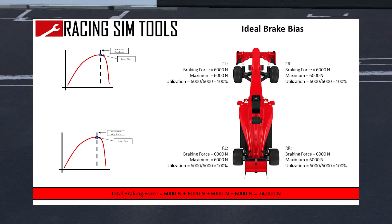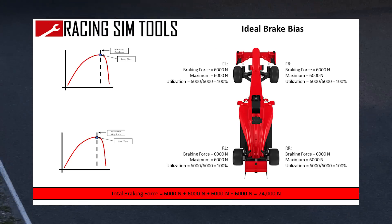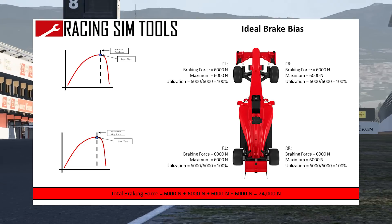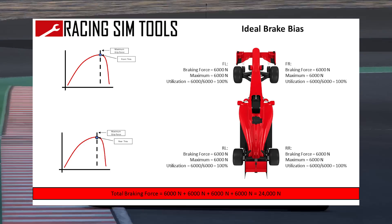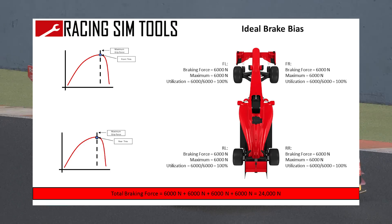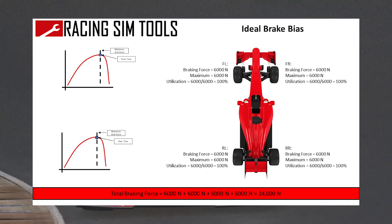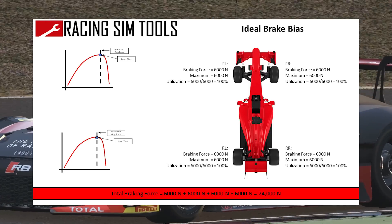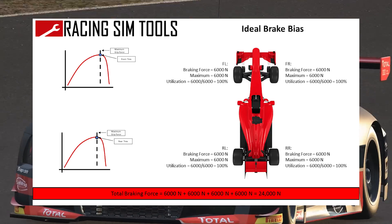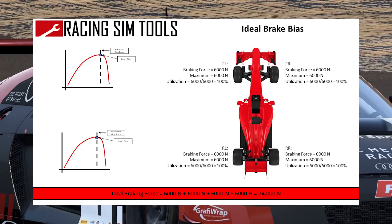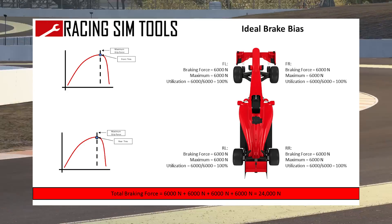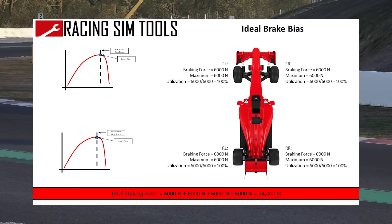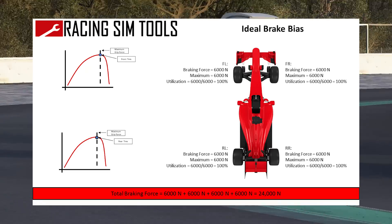If you look on the graphs on the left, the blue point is where the force is — the brake force compared to the maximum. You can see we're right on that dashed line, meaning we're using up as much of the tire as possible. So we're using as much grip that both the front and the rear axle tires have to offer. The total braking force at the bottom is 6,000 newtons times four, which is 24,000 newtons.